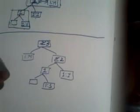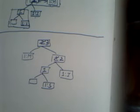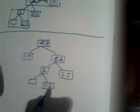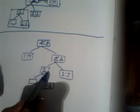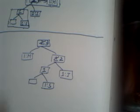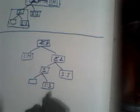Now we insert the second S. Since we already have S here, we just update the frequency, so it becomes 2. Then this parent becomes 2 plus 1 is 3, and then it becomes 4. But there is still a problem — the order for example becomes 2 and 2, so it becomes 2 plus 1 is 3, 3 plus 1 is 4, but the order is not maintained.